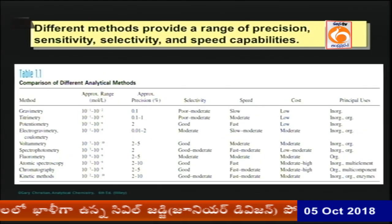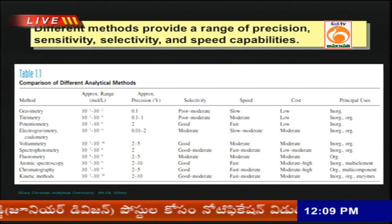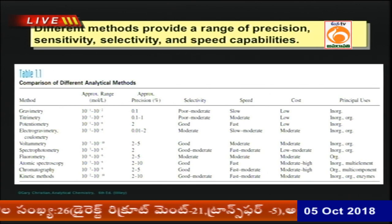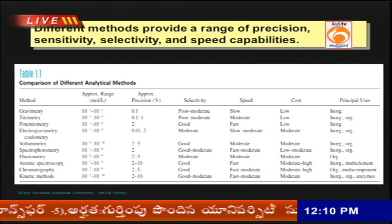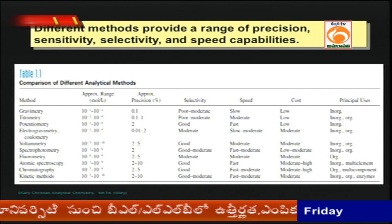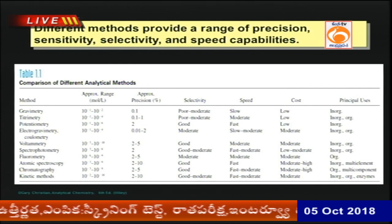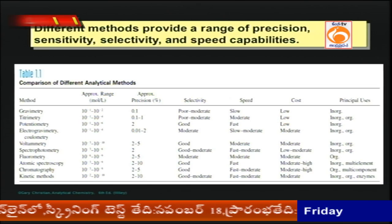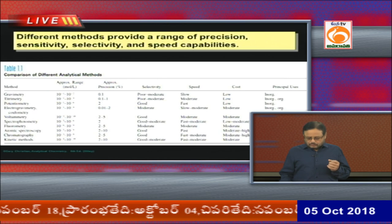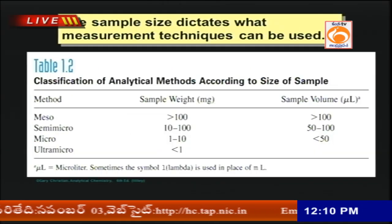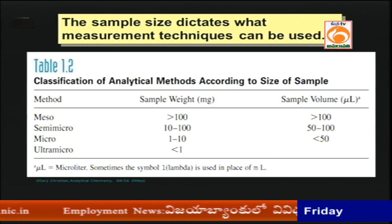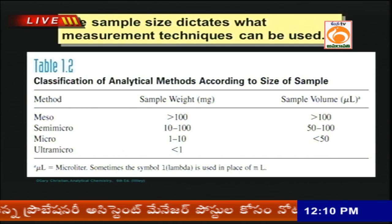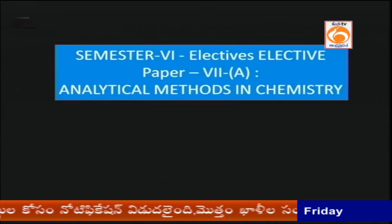Different methods for identifying these four things include precision, sensitivity, selectivity, and speed capabilities. Examples include gravimetric, titrimetric, potentiometry, electrogravimetry, voltammetry, and different types of matrix techniques. Chromatography is also used to identify substances both qualitatively and quantitatively. These techniques are also based on the size of the sample — the sample weight and sample volume determine which analytical method is used.